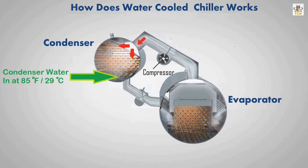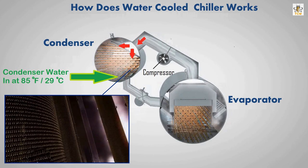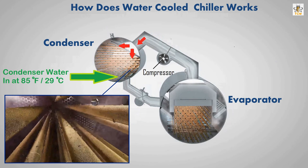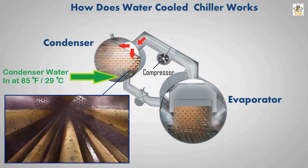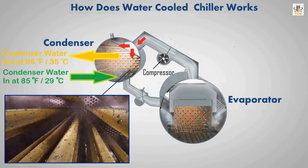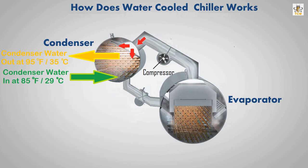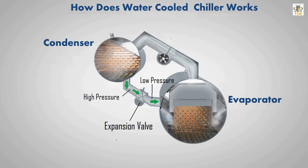The condenser water enters the condenser tank at 85 degrees Fahrenheit or 29 degrees Celsius. The refrigerant condenses as it flows on the cooler surface of the condenser tubing. Inside the tubing, condenser water absorbs heat from the refrigerant, and its temperature increases, flowing out at 95 degrees Fahrenheit or 35 degrees Celsius. The liquid refrigerant in the condenser tank flows back to the evaporator tank. An expansion valve maintains the pressure difference between the evaporator tank and condenser tank.